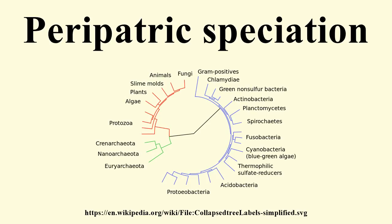Such organisms are usually closely related, their distribution being the result of peripatric speciation. Peripatric speciation is a form of speciation — the formation of new species through evolution. In this form, new species are formed in isolated peripheral populations. This is similar to allopatric speciation in that populations are isolated and prevented from exchanging genes.